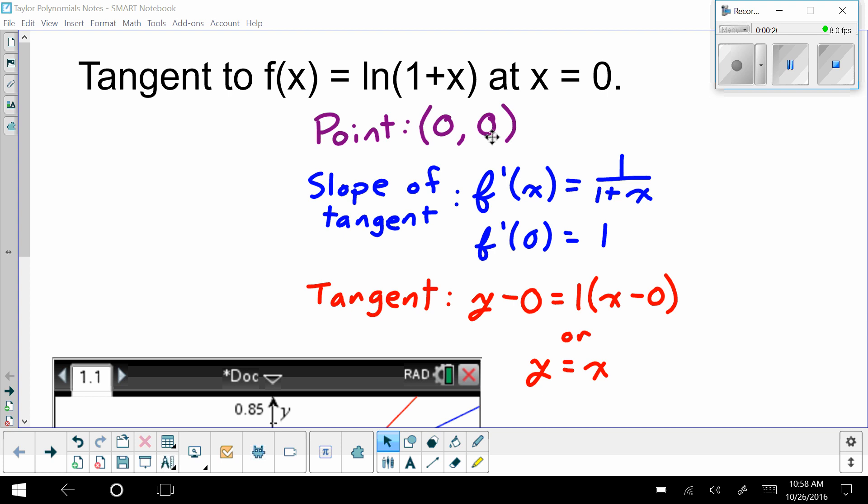Then the slope of the tangent is the derivative of the function. The derivative of the natural log of 1 plus x is 1 over 1 plus x. Plugging in 0 tells me that the slope when x is 0 would be 1. So the equation of my tangent would be y equals x. That's something that you're used to doing, that you do very well by this point, hopefully.